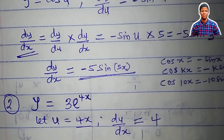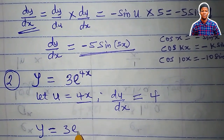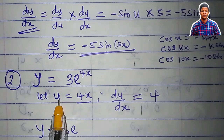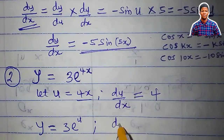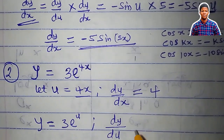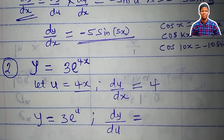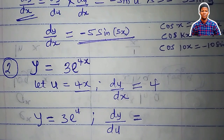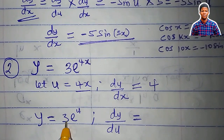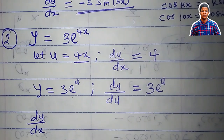Differentiate 4x to get 4. So y will now be equal to 3e^u, where u replaces 4x. I differentiate y with respect to u. Remember from the previous video: the derivative of e^x is e^x, so the derivative of e^u is still e^u. With the constant 3, differentiating gives 3e^u.